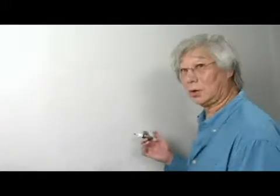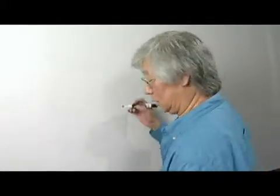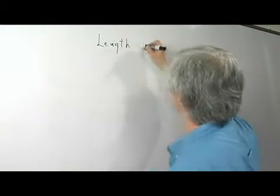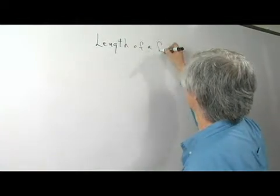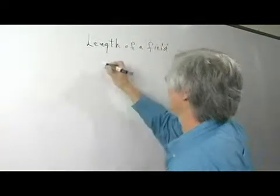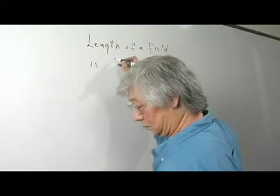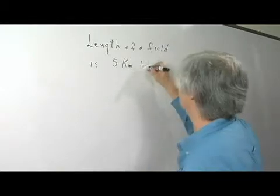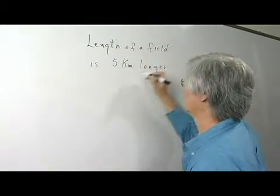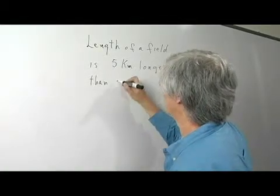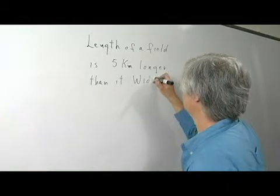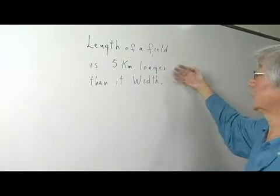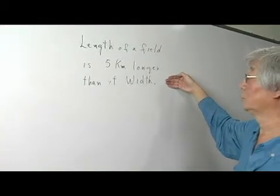Here's an example of how algebra can be used. We can say that the length of the field is 5 kilometers longer than its width. That is stating this information in word form.